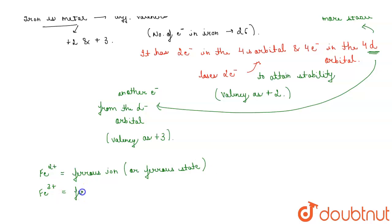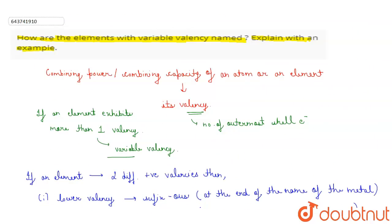And Fe³⁺, that is ferric iron or ferric state. So therefore iron exhibits ferrous state and ferric state. This is the solution. Thank you.